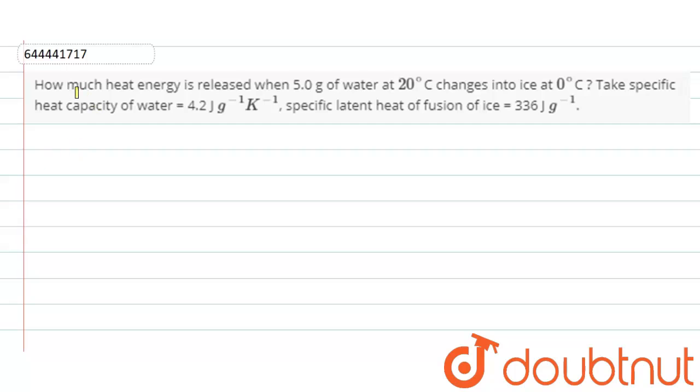Hello friends, so our question is how much heat energy is released when 5.0 gram of water at 20 degree Celsius changes into ice at 0 degree Celsius? Take a specific heat capacity of water to be 4.2 joule per gram per kelvin. Specific latent heat of fusion of ice is 336 joule per gram.